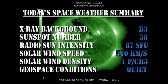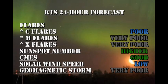In summary, the X-ray background has risen to the B3 level. The sunspot number has dropped to 38. The radial sun intensity is at 87 solar flux units. The solar wind speed has dropped to 510 km per second with a density of about 1 proton per cubic centimeter, and geospace conditions are considered quiet. My 24-hour forecast will remain similar to yesterday: the chance of getting intermittent C-flares is increasing slightly but still not very good, while the chance of M or X flares is quite remote. The sunspot number will drift higher as new regions appear. The chance of coronal mass ejections is quite good, but the chance of a major geomagnetic storm in the next 24 hours is quite low.